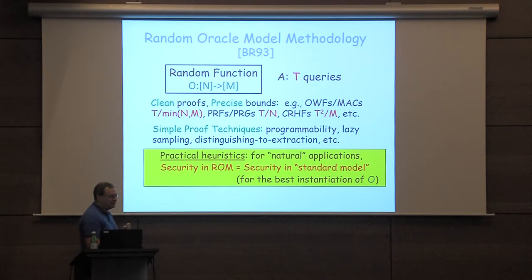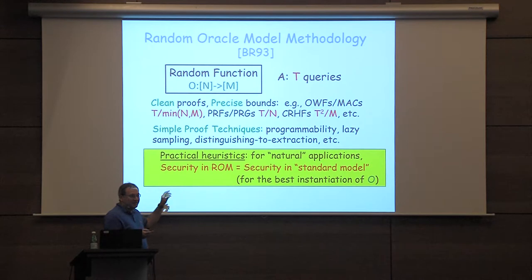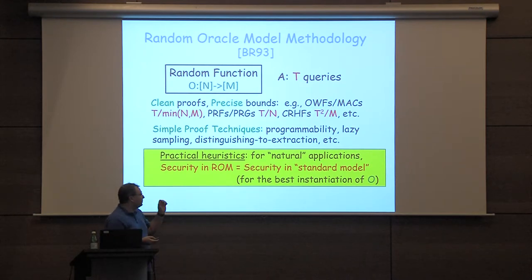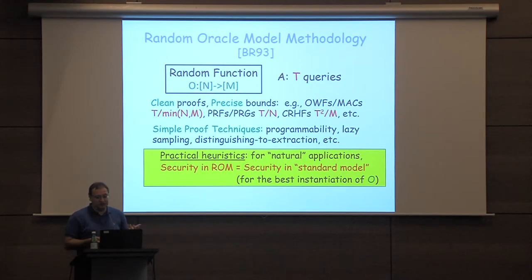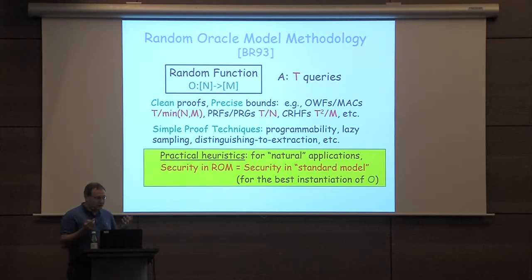Namely, at least for natural applications, the security bound you get in this idealized — maybe unrealistic — random oracle model is actually equal to the best possible security in the standard model for the best possible instantiation. This methodology is widely used in practice, at least to give you an idea of the right setting of parameters.